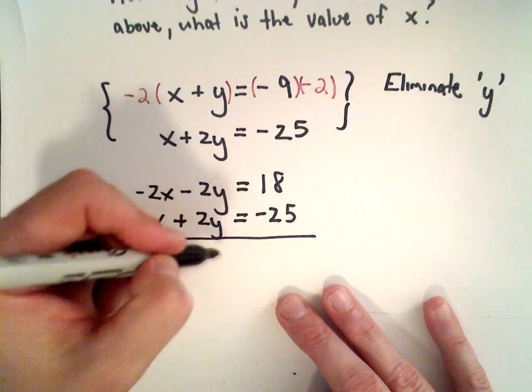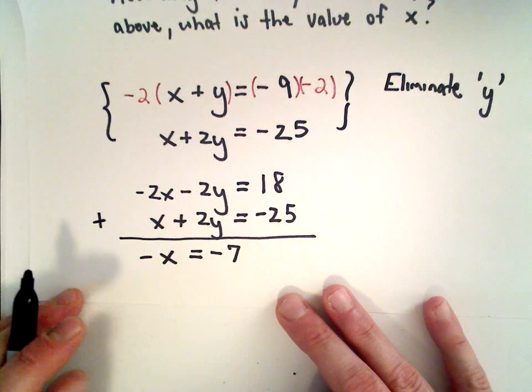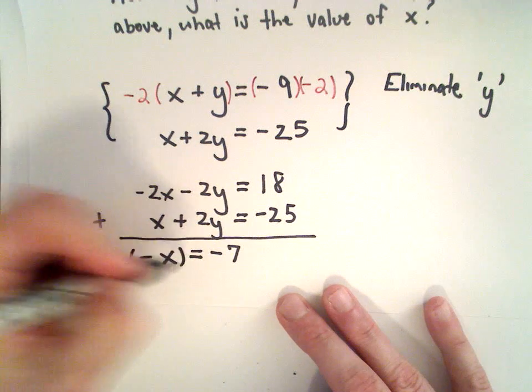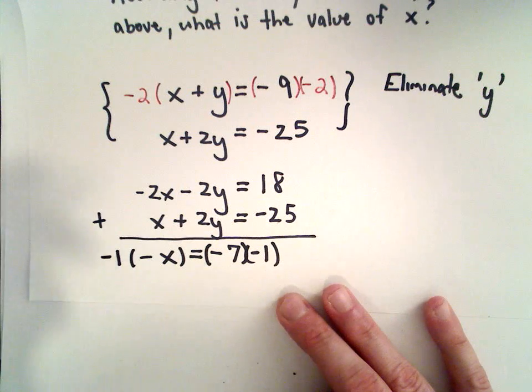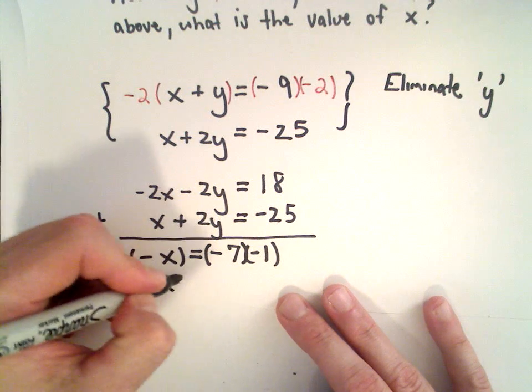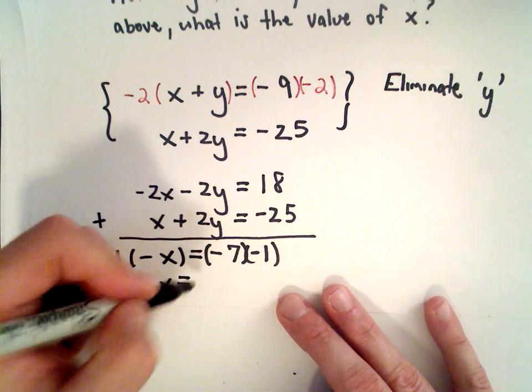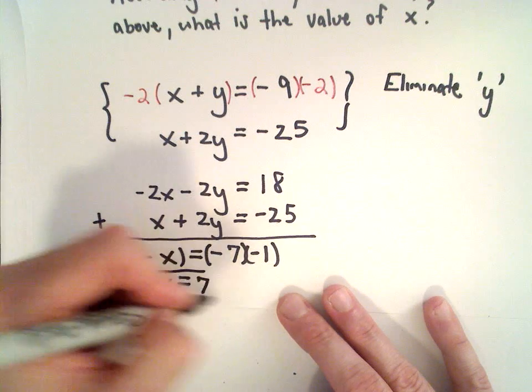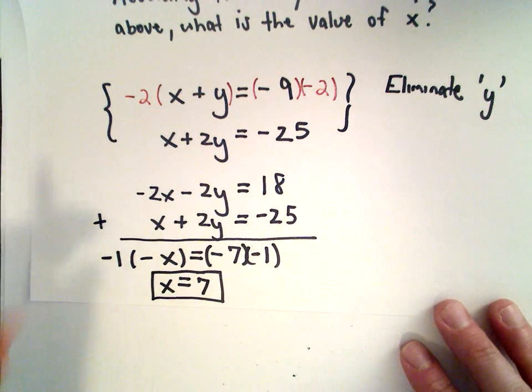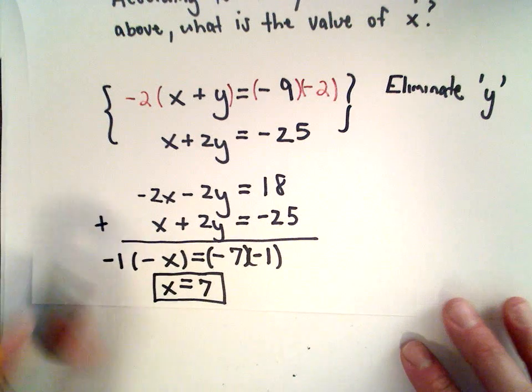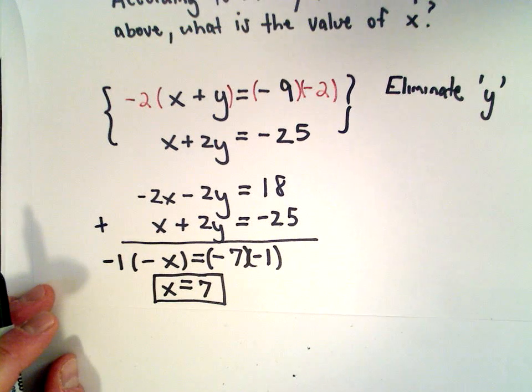18 plus negative 25, that's going to be negative 7. And now if I just multiply both sides by negative 1, or equivalently I could divide by negative 1, I'll be left with positive x on the left side and positive 7 on the right side. So the value of x that would be part of the solution to this equation, the x value would be equal to positive 7.